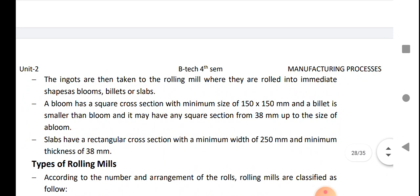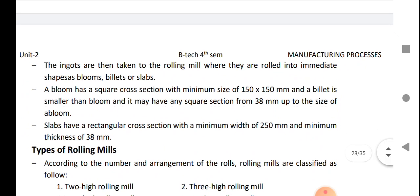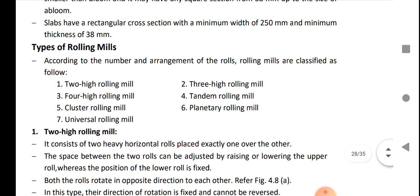The ingots are taken into rolling mill where they are rolled into intermediate shapes as bloom, billet, or slab. The bloom has a square cross section with a minimum size of 150 by 150 mm, and the billet is smaller than bloom with any square section 38 mm up to size of bloom. Slabs have a rectangular cross section with a minimum width of 250 mm and minimum thickness of 38 mm.